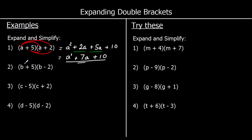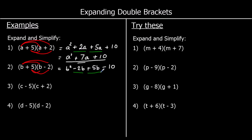For the second one we've got b times b, which is b squared. b times negative two — a positive times a negative gives a negative answer — so negative 2b. Five times b is 5b, positive 5b. And five times negative two — a positive times a negative is negative, and five twos are ten, so negative ten. Collecting like terms: negative 2b plus 5b is 3b. So we've got b squared plus 3b minus ten.